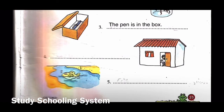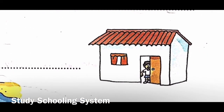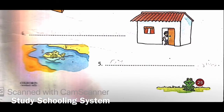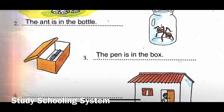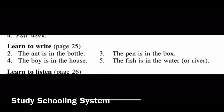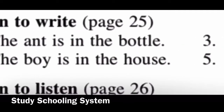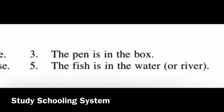Number four: there is a house and a boy is inside, so we write: 'The boy is in the house.' Number five: there is a fish and the fish is in the water, so: 'The fish is in the water.' Make sure to put full stops after your sentences. So the answers are: number two - the ant is in the bottle, number three - the pen is in the box, number four - the boy is in the house, number five - the fish is in the water (or the fish is in the river).